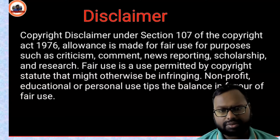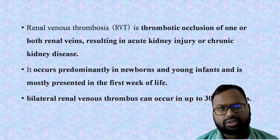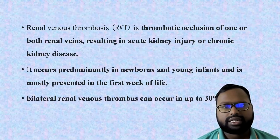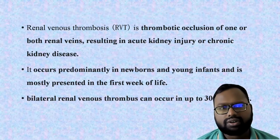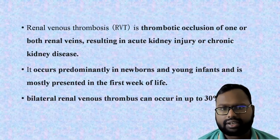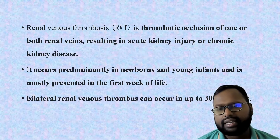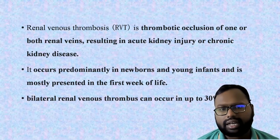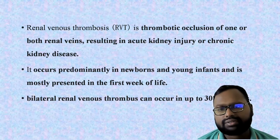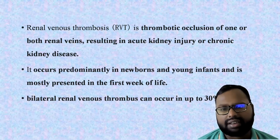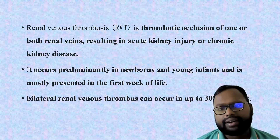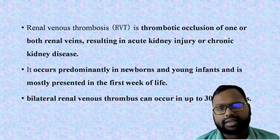Let's discuss renal vein thrombosis. Renal vein thrombosis is a thrombotic occlusion of one or more — or both — renal veins, resulting in acute kidney injury or chronic kidney disease. It occurs predominantly in newborns and mostly in the first week of life. Bilateral renal vein thrombosis can occur in up to 30% of cases.